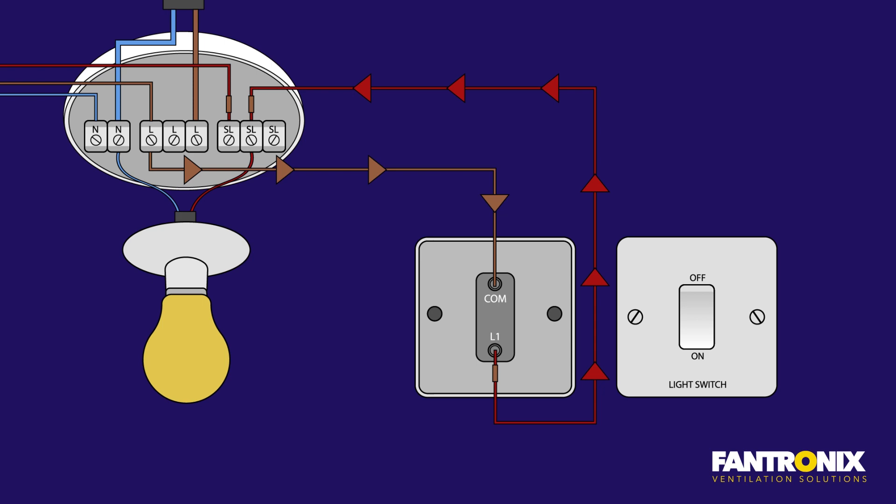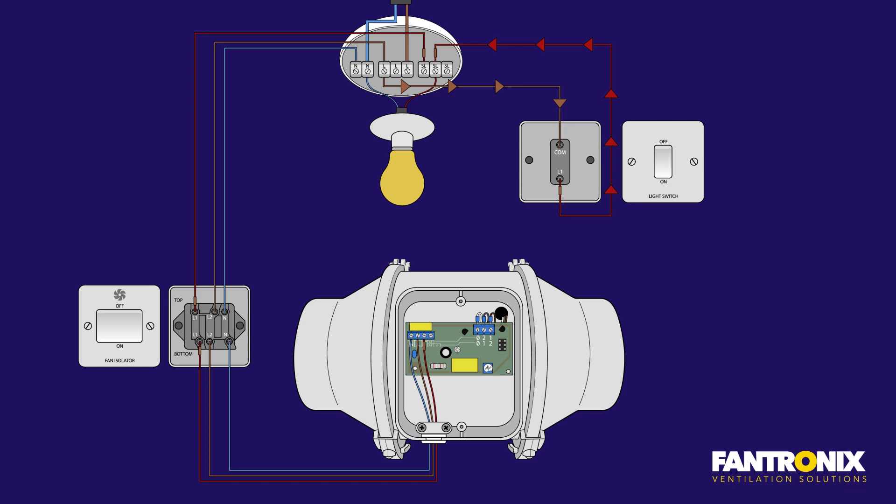When you switch the light on, the fan will come on. When you switch the light off, the fan will run on on its run-on timer, which is why we have the permanent live connection.